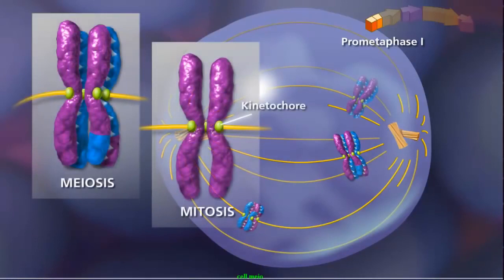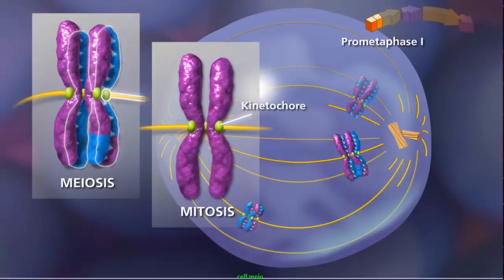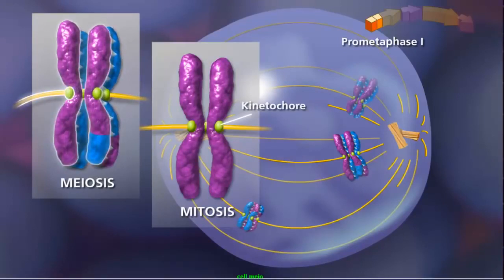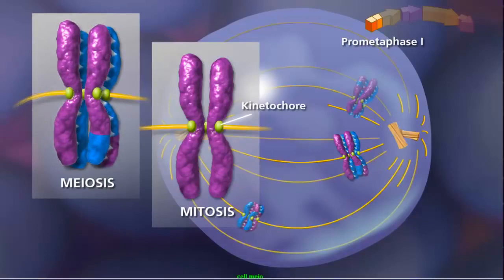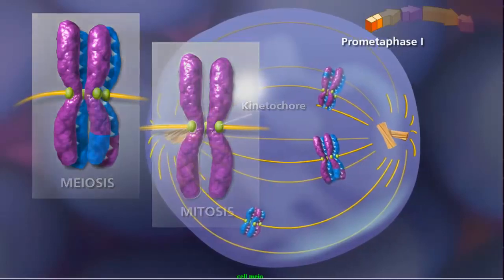Because of synapsis and crossing over in meiosis, homologous chromosomes remain aligned, so that a pair of sister chromatids is attached to only one pole by the kinetochore microtubules. In mitosis, each sister chromatid is attached to a spindle fiber. The fibers originate from opposite poles.